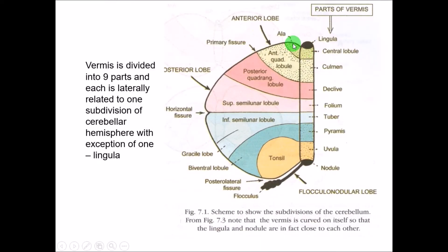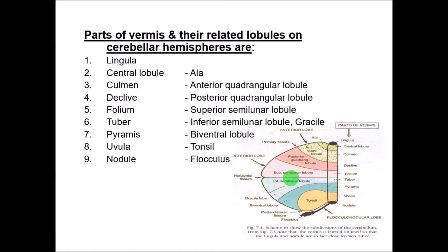The central lobule is related to the ala of the anterior lobe, and the culmen is related to the anterior quadrangular lobule — these two form the anterior lobe. The declive is related to the posterior quadrangular lobule. The folium is related to the superior semilunar lobule. The tuber is related to two parts: the inferior semilunar lobule and the gracile lobe — the only vermis part related to two hemisphere parts. The pyramid relates to the biventral lobule, the uvula to the tonsil, and the nodule to the flocculus — together forming the flocculonodular lobe.